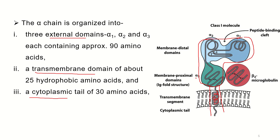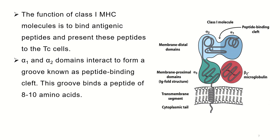The transmembrane domain is composed of hydrophobic amino acids, which allow the chain to insert into the membrane. The function of the peptide binding groove formed by alpha 1 and alpha 2 domains is to present antigenic peptides to the cytotoxic T cell (TC cell).